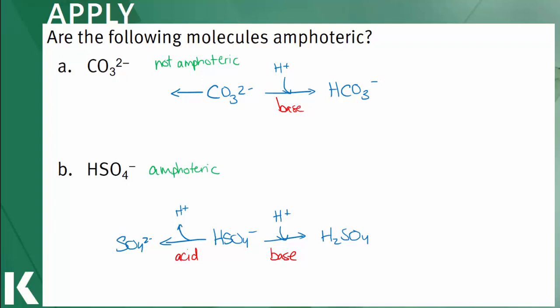To recap, amphoteric species are molecules that can lose a proton and act as an acid or gain a proton and act as a base. Remember this term when we discuss the autoionization of water in another video.